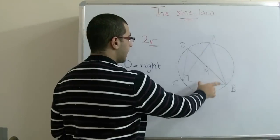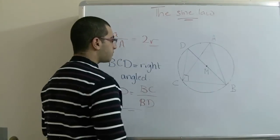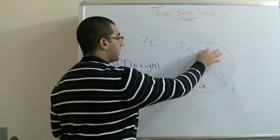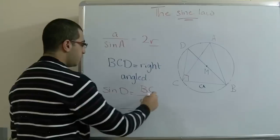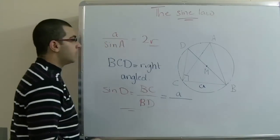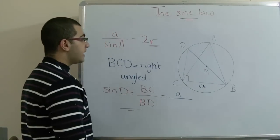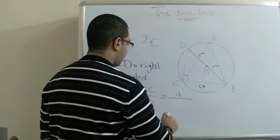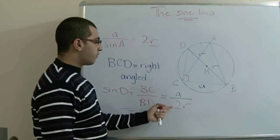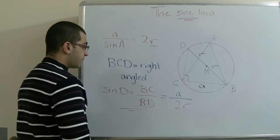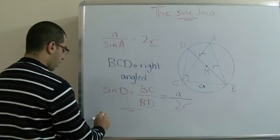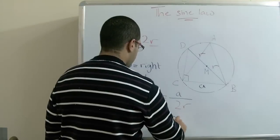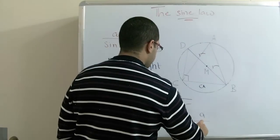Our triangle ABC contains the same side BC. The side BC in triangle ABC is referred to as a, because it is opposite to angle A. So in sine D we can write BC as a. And BD, as the diameter of the circle, can be written as 2R. So sine D equals a over 2R. Multiplying both sides by 2R gives us 2R sine D equals a, and therefore 2R equals a over sine D.